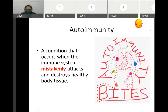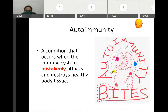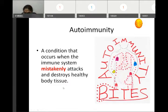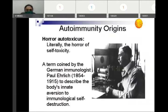Autoimmunity — the meaning of autoimmunity: auto means self and immunity means protection, so literally it means self-protection, but actually it is injury to self. It is a condition that occurs when the immune system mistakenly attacks healthy body tissue. This concept was initially described by Ehrlich, an immunologist.